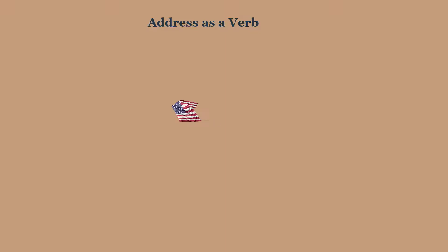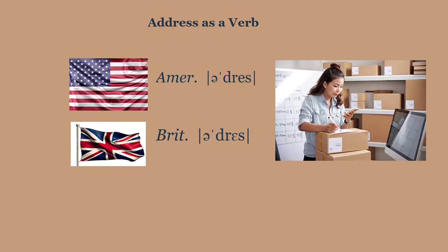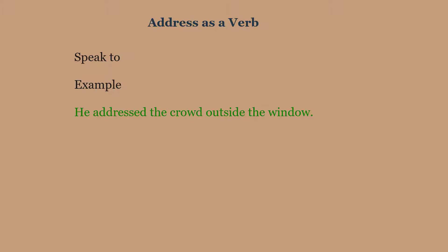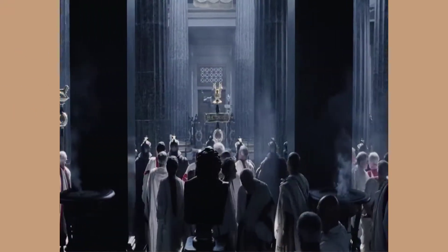As a verb, in both American English and British English there will be no differences — both say 'address.' The first meaning is 'speak to.' Example: 'He addressed the crowd outside the window.' The second meaning is 'give attention to or deal with.' Example: 'We address the question at the next meeting.'